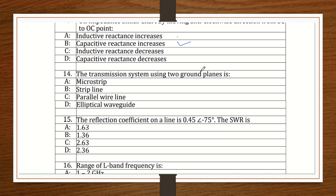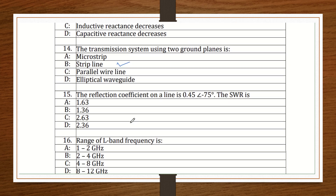Question 14: Which transmission line system uses two ground planes? In microstrip, there is a ground at the bottom, then substrate, then metal strip on top. In stripline, there are two ground planes because the substrate is sandwiched between two ground planes — so stripline is the answer. Question 15: Given a reflection coefficient on a line, calculate the SWR. Using SWR = (1 + |Γ|) / (1 − |Γ|), with |Γ| = 0.45, we get (1.45)/(0.55) = 2.63.